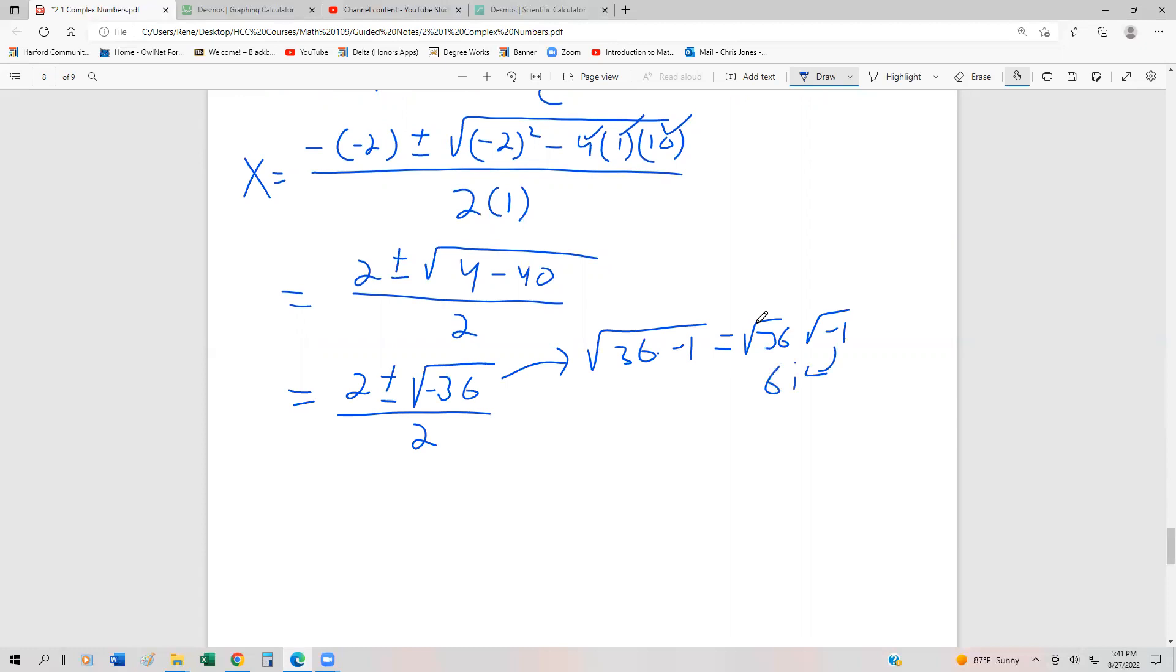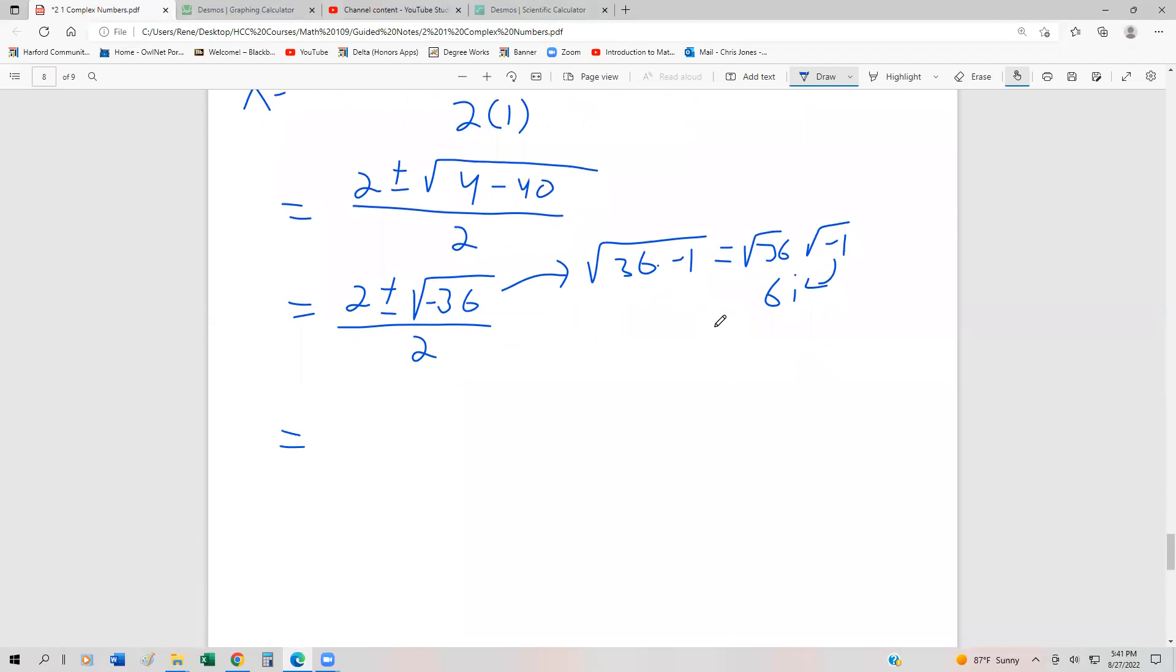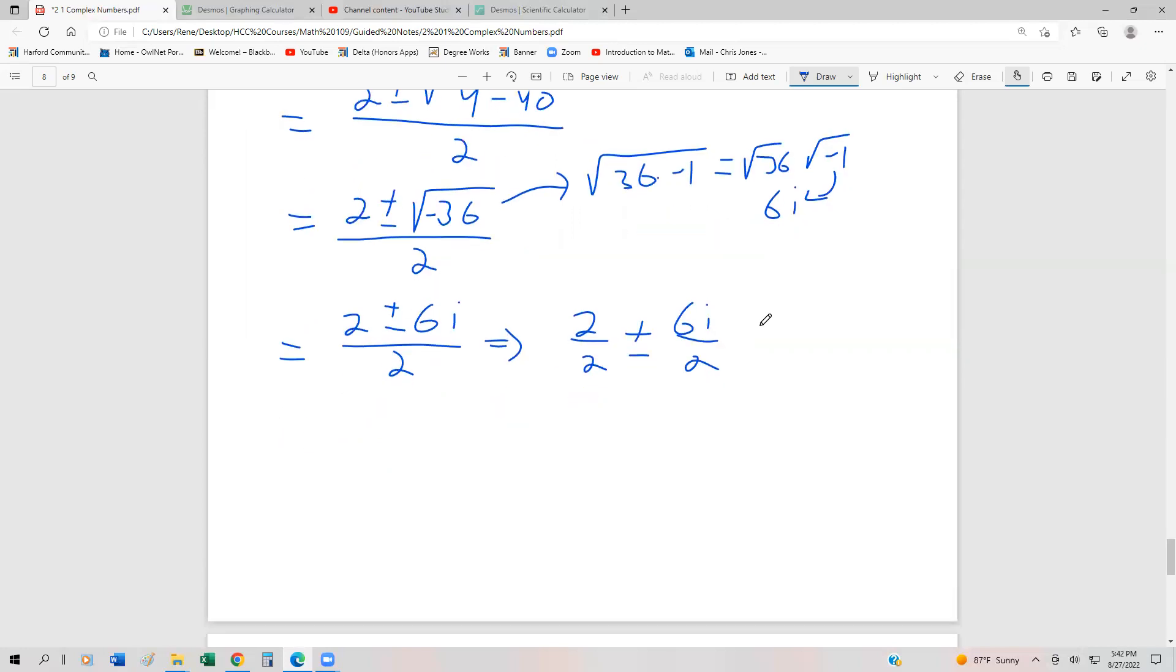The square root of negative 1 is i. So now we can write this as 2 plus minus 6i divided by 2, which is going to be the same as 2 over 2 plus or minus 6i over 2, by breaking up into two smaller fractions. Finally, 2 divided by 2 is 1. 6i over 2 is 3i.